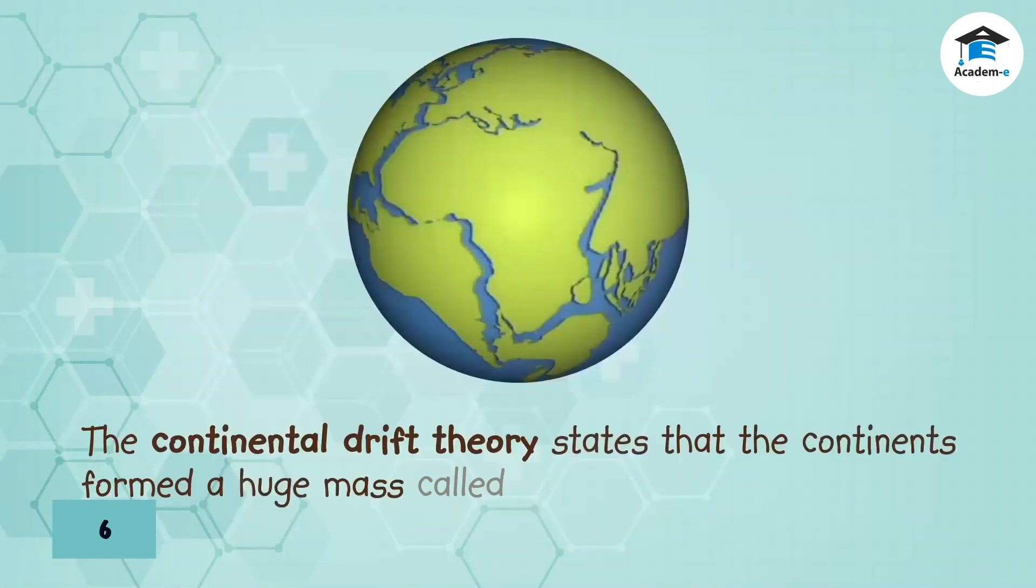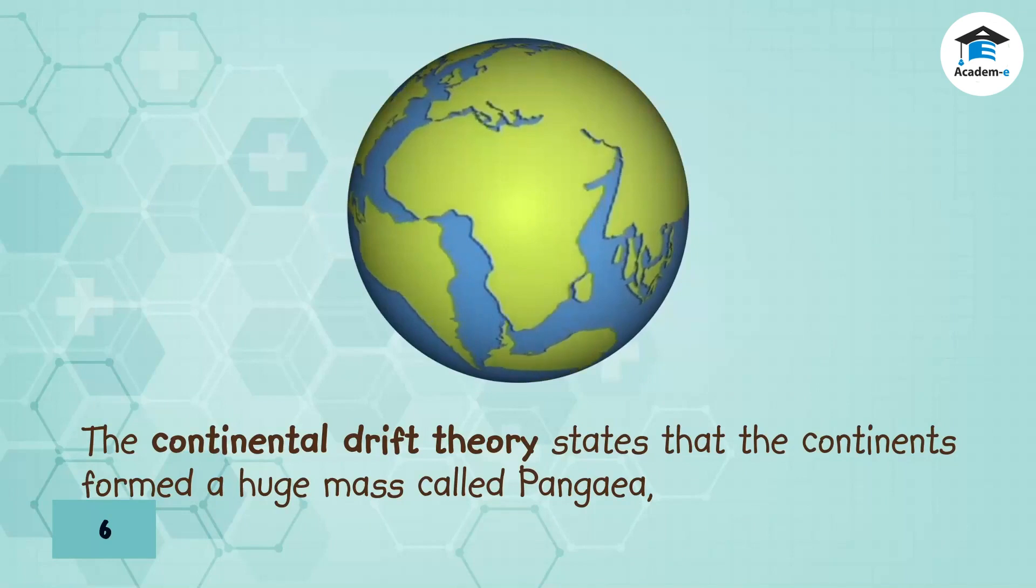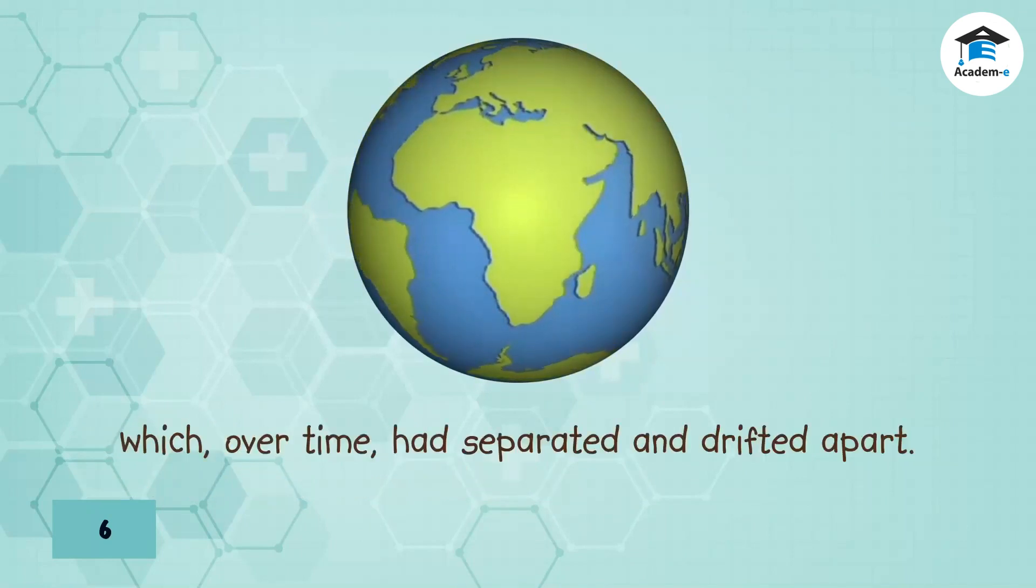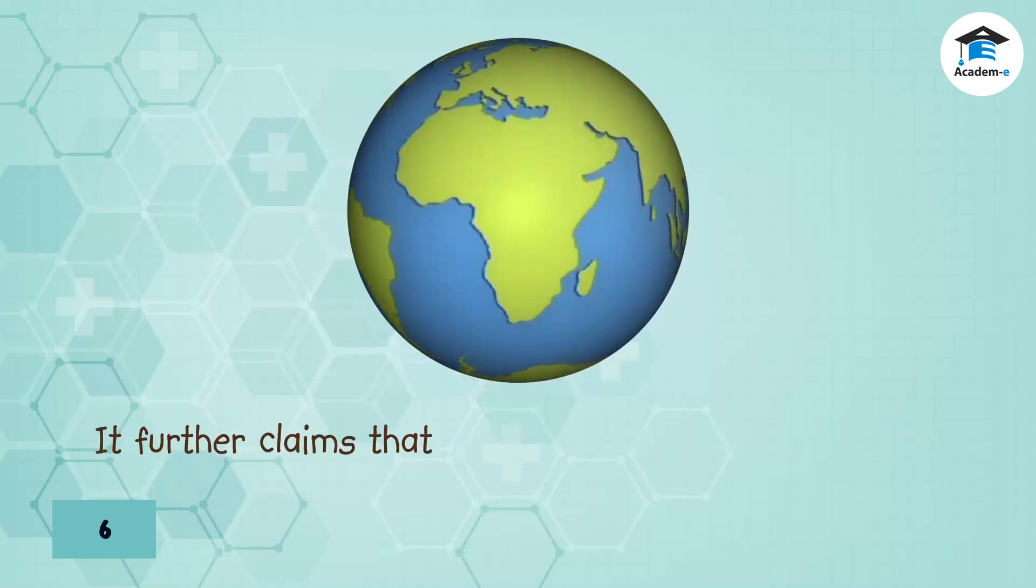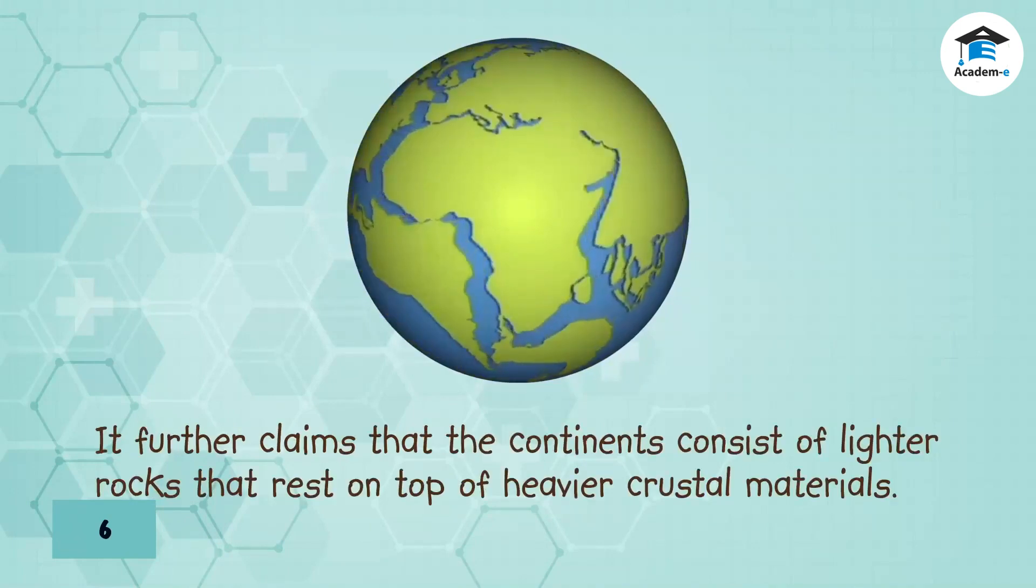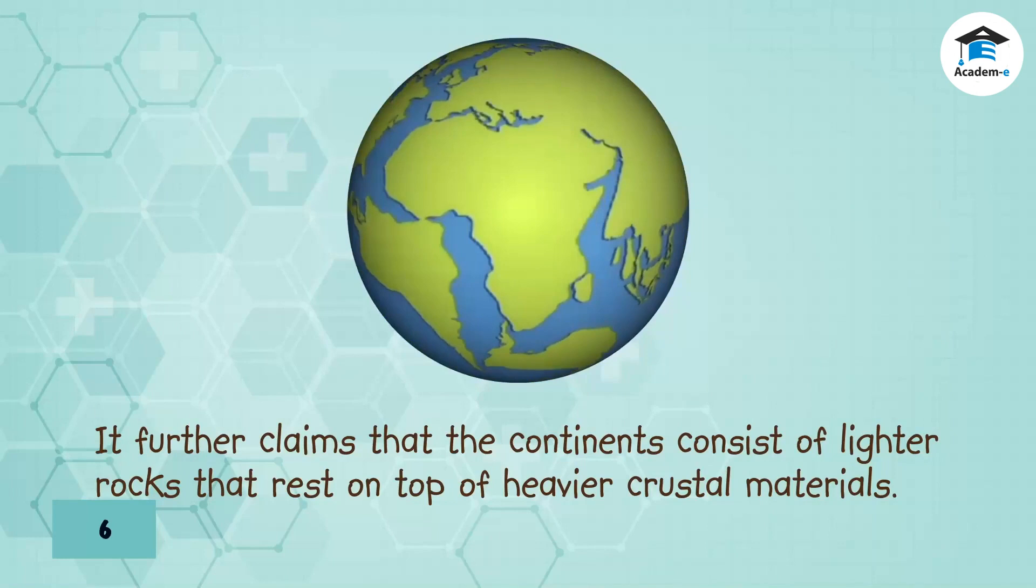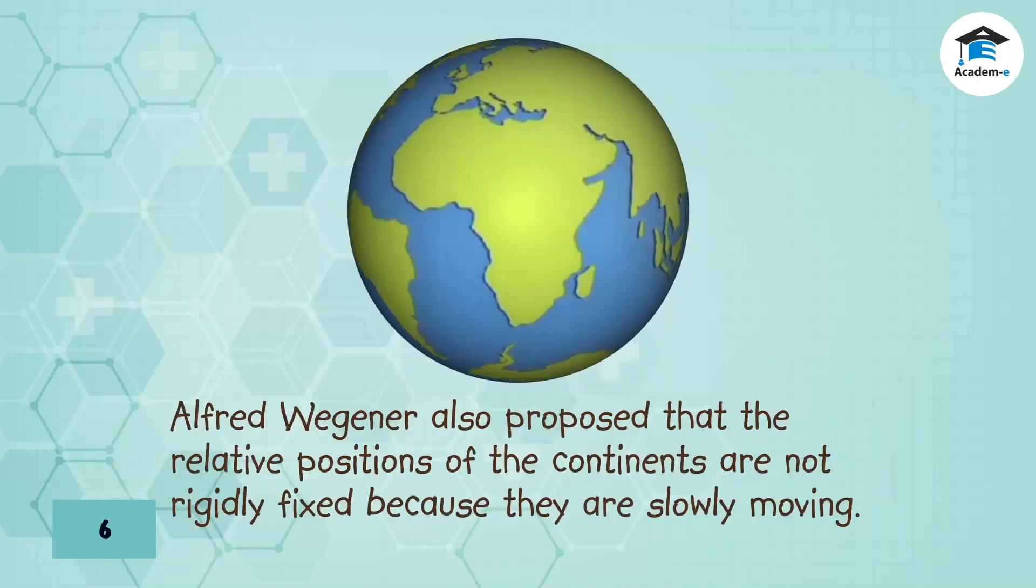The continental drift theory states that the continents formed a huge mass called Pangea, which over time had separated and drifted apart. It further claims that the continents consist of lighter rocks that rest on top of heavier crustal materials. Alfred Wegener also proposed that the relative positions of the continents are not rigidly fixed because they are slowly moving.